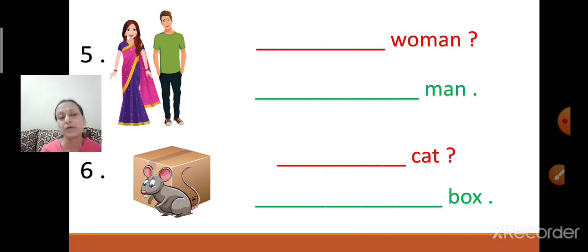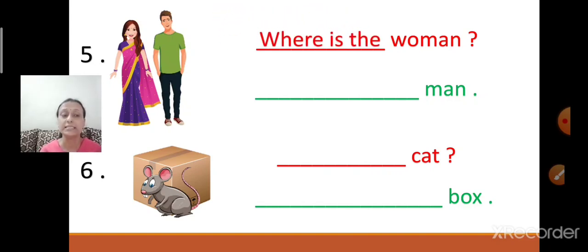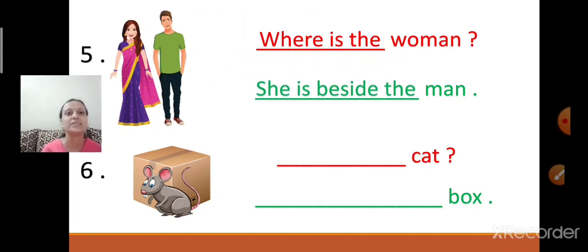Now look at question number five — a man and a woman. First frame the question: Where is the woman? Where is the woman standing, children? She is beside the man. Where is the woman standing? She is standing beside the man. Spelling of beside: B-E-S-I-D-E.